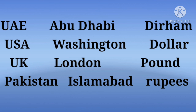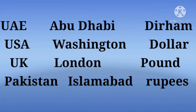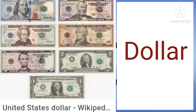Next is UAE, which means United Arab Emirates. Its capital is Abu Dhabi and currency is Dirham. Have a look at the currency of UAE. Next is USA, which means United States of America. Its capital is Washington and currency is Dollar. Here is a picture of Dollar.